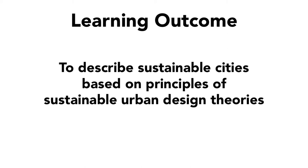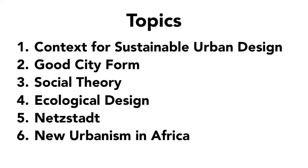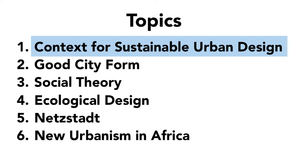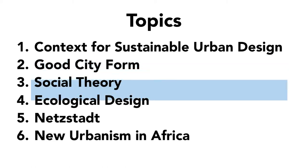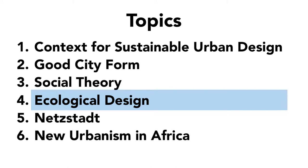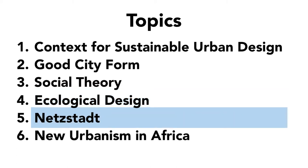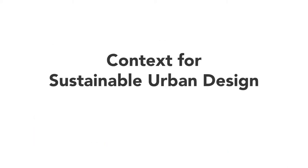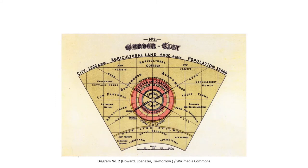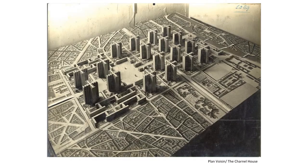You'll go through the topics of this module in a series of videos. You will first get some context for sustainable urban design, followed by urban design theories including good city form by Kevin Lynch, social theory by Jane Jacobs, ecological design by John and Nancy Todd, netstat by Franz Oswald and Peter Baccini, and new urbanism in Africa by Vanessa Watson. In the first video, we'll start with a bit of context for sustainable urban design, with reference to earlier works by Ebenezer Howard's Garden City and Le Corbusier's Contemporary City, and some guiding questions to consider when cities grow to accommodate growing populations in light of some urban design competition entries.